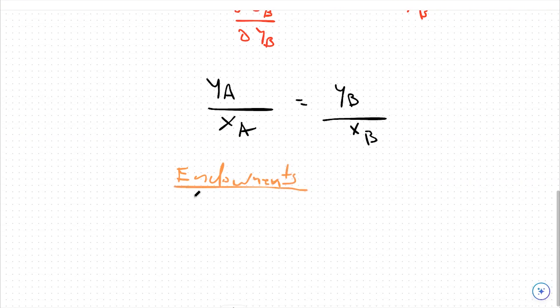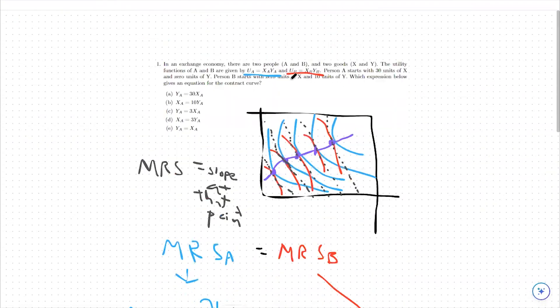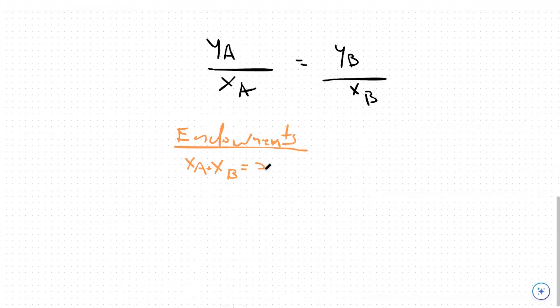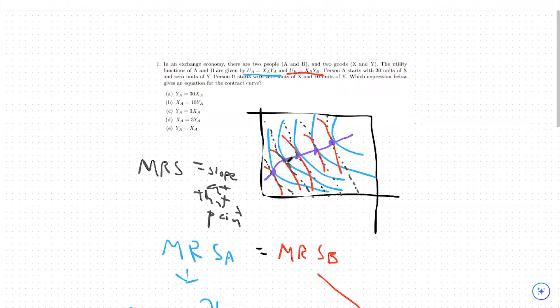Let's start with good X. That means XA plus XB, when we add up the amount of all good X in this market, there should be 30 units of X and 0 units of Y for person A, 0 units of X and 10 units of Y for person B. So total, there's 30 units to kind of distribute here for good X. And then for good Y, we're going to do YA plus YB equals 10. Person A has 0, person B has 10 units. So total, there's 10 units to distribute of good Y. We're looking for trades that get us to more optimal places on this contract curve.